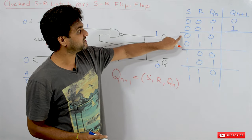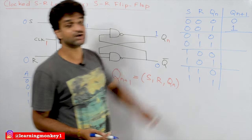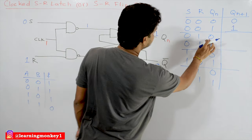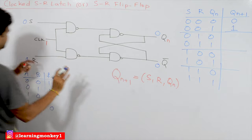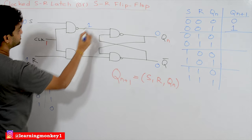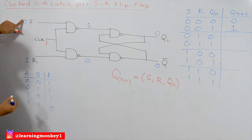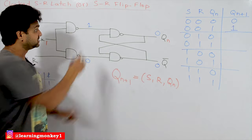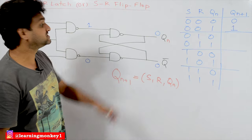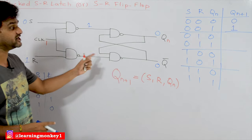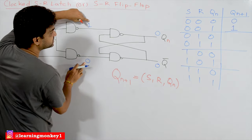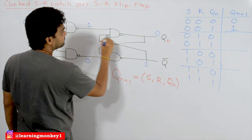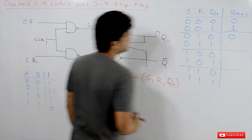Next, when S=0, R=1, and Qn=0: the NAND gate inputs are 0,1 producing 1, and 1,1 producing 0. Since the clock is gating the inputs, we get outputs 1 and 0 feeding into the SR latch. With Qn=0 as previous input, the circuit settles to produce Qn+1=0. For S=0, R=1, Qn=1: the inputs produce 1,0 and the circuit computes through several iterations. The output Qn+1 becomes 0, confirming the reset operation.